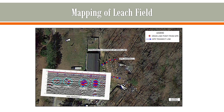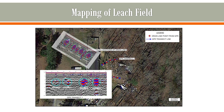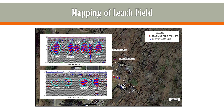Just to show you what that looks like, these are those four lines. Some of them are showing up a little bit better than others, but there are four distinct drain lines imaged by the GPR. This is on the south side and then on the north side of that property.